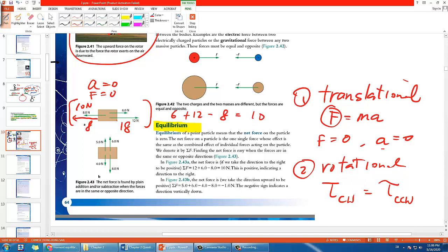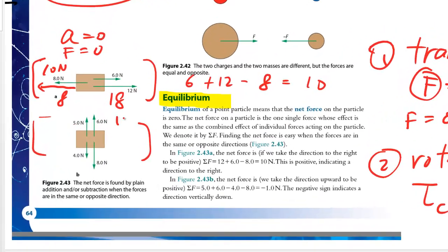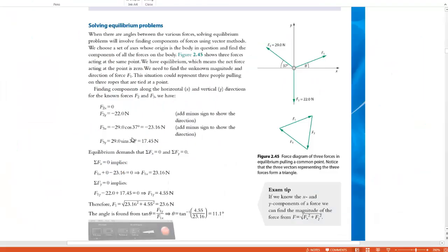So 10 newtons is the force you have to add in the opposite direction. Similarly for the vertical: you have 5 and 6, which is 11 upward, and 4 and 8, which is 12 downward, so you just need to add 1 more newton upward.